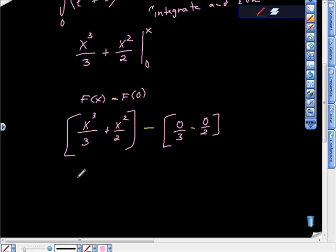And finally, that will give us one-third X cubed plus one-half X squared. And all I want to do now to prove this is prove this through differentiation.